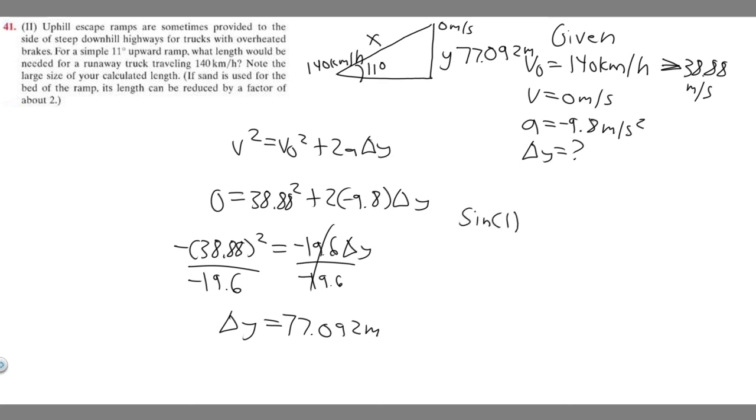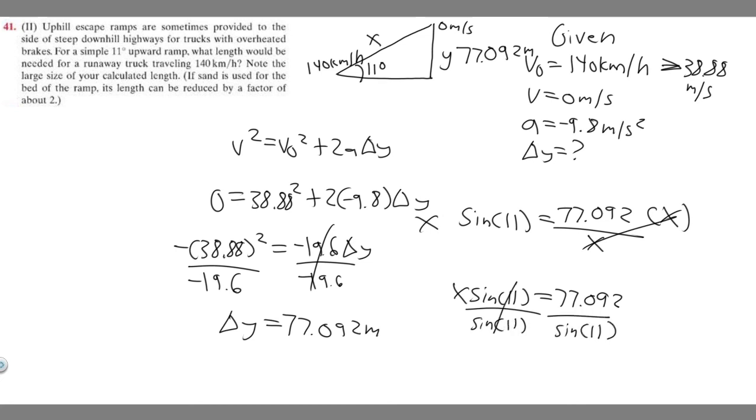So we know the sine of an angle, in this case 11, is equal to the opposite, which is 77.092 over the hypotenuse, which we labeled x. So if we want to solve for x, multiply both sides by x, and then x times the sine of 11 equals 77.092. Divide both sides by the sine of 11. So essentially x is going to be 77.092 over the sine of 11. If you go ahead and do this, you'll get x equals about 404 meters.